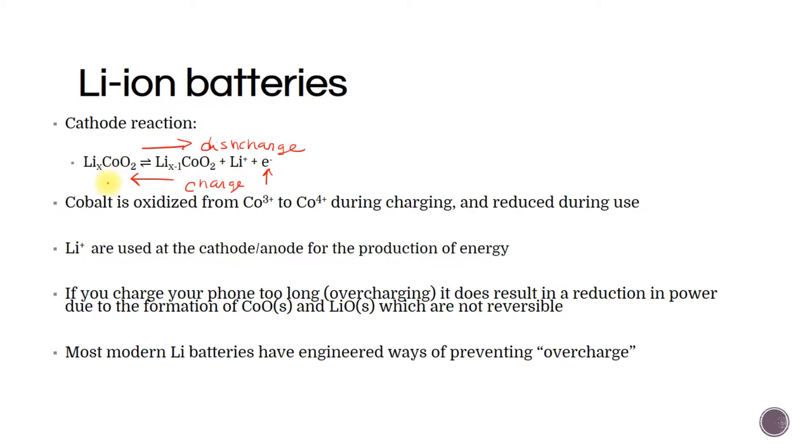If I plug it into the wall and I increase the number of electrons, it's going to shove the reaction back towards the left. The cobalt is oxidized. The cobalt here is going from a plus three over here to a plus four, so it's losing an electron. So the electron is actually coming from the cobalt. The lithium is a plus one here and a plus one there. This chemistry isn't all that well understood. The lithium is used for both the cathode and the anode to produce the energy. It's a complicated process.